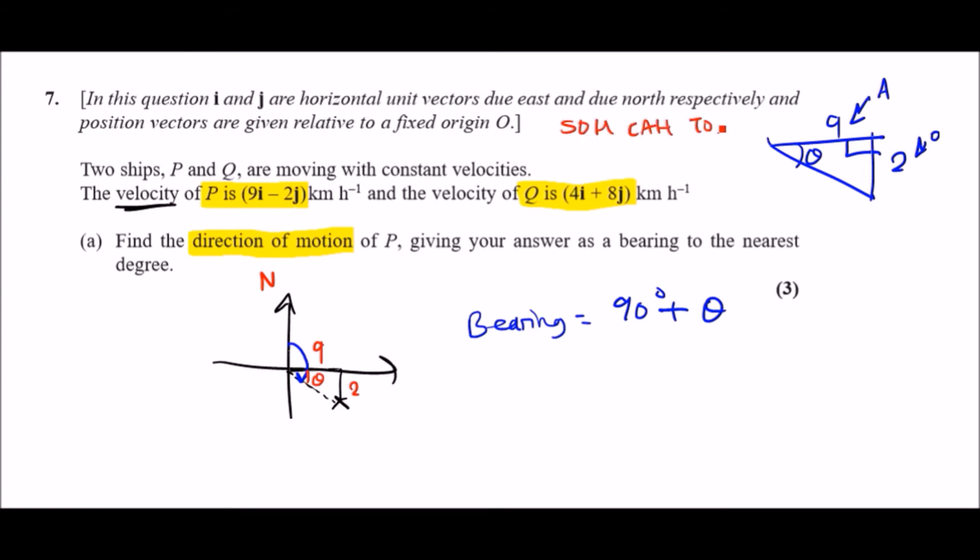The two things that are related from SOHCAHTOA would be the tangent, because tangent has opposite and adjacent. We can say instantly that the equation of interest would be tan of the angle theta equals opposite over adjacent, so 2 over 9.